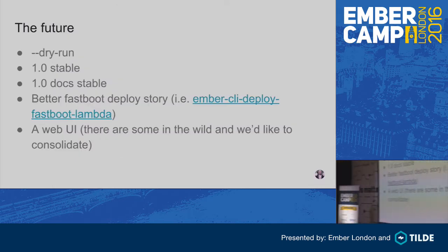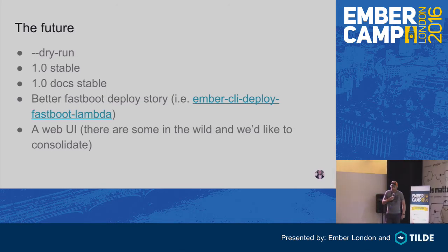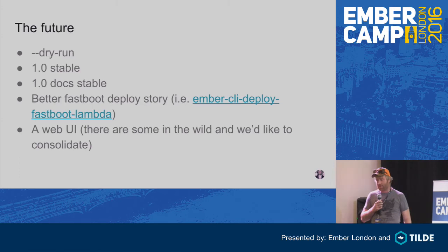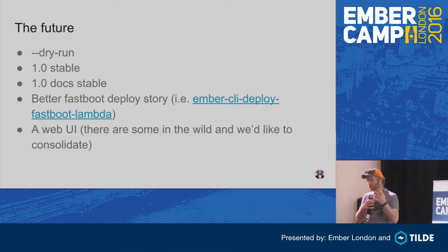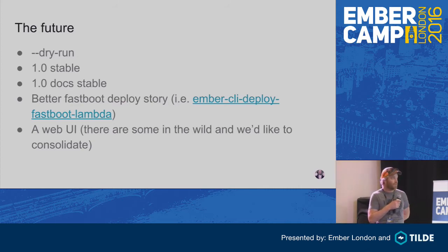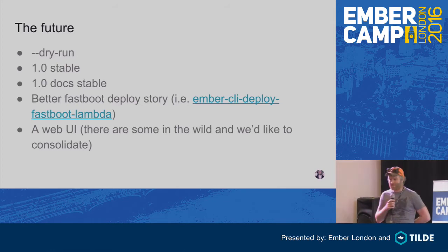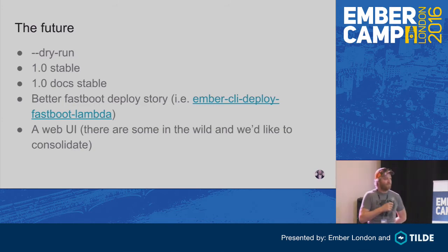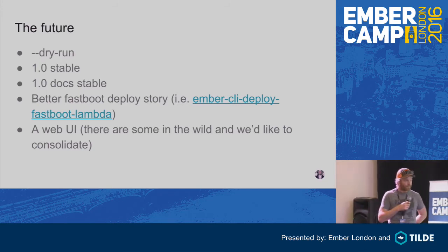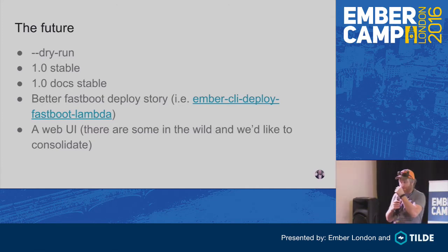What's coming up: dry run, which is an option you'll be able to pass in to output the order the pipeline and plugins are going to run in — it doesn't actually do anything but lets you verify your config works. We're going to release the final version of 1.0 docs. Fastboot — lots of people ask how Ember CLI Deploy fits with Fastboot, and Tom has done some good work around that. We also want to look at a web UI — there have been a couple created, and we're keen to consolidate those to have a web frontend for Ember CLI Deploy.